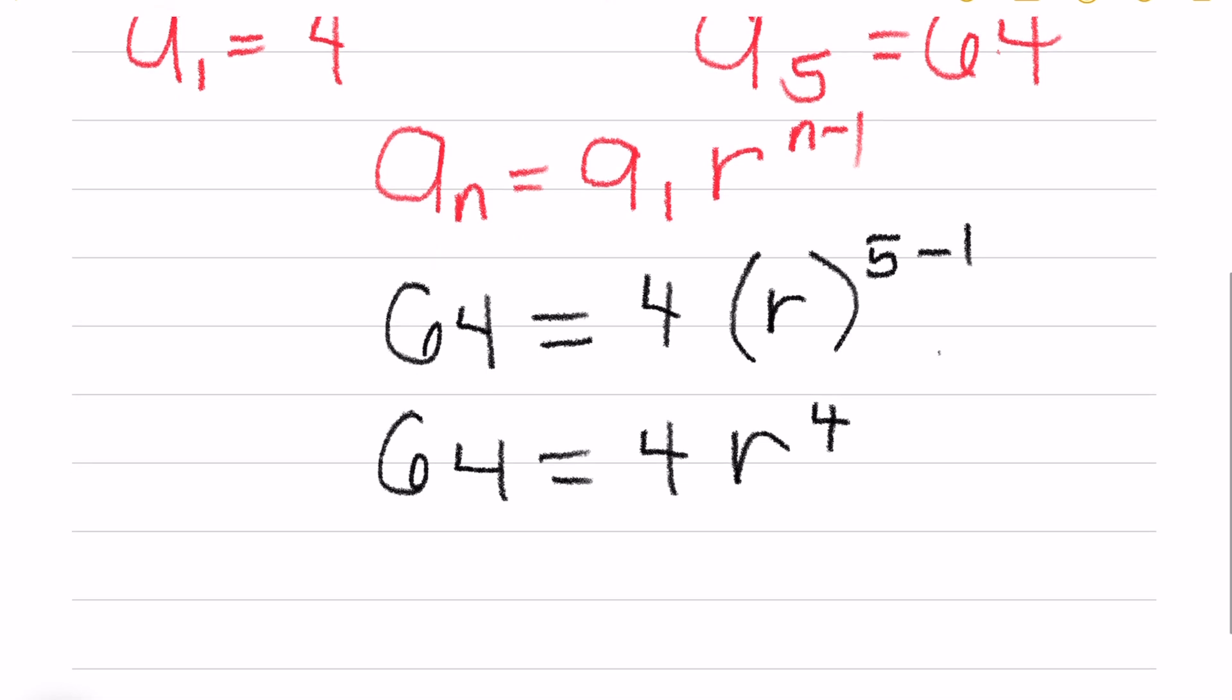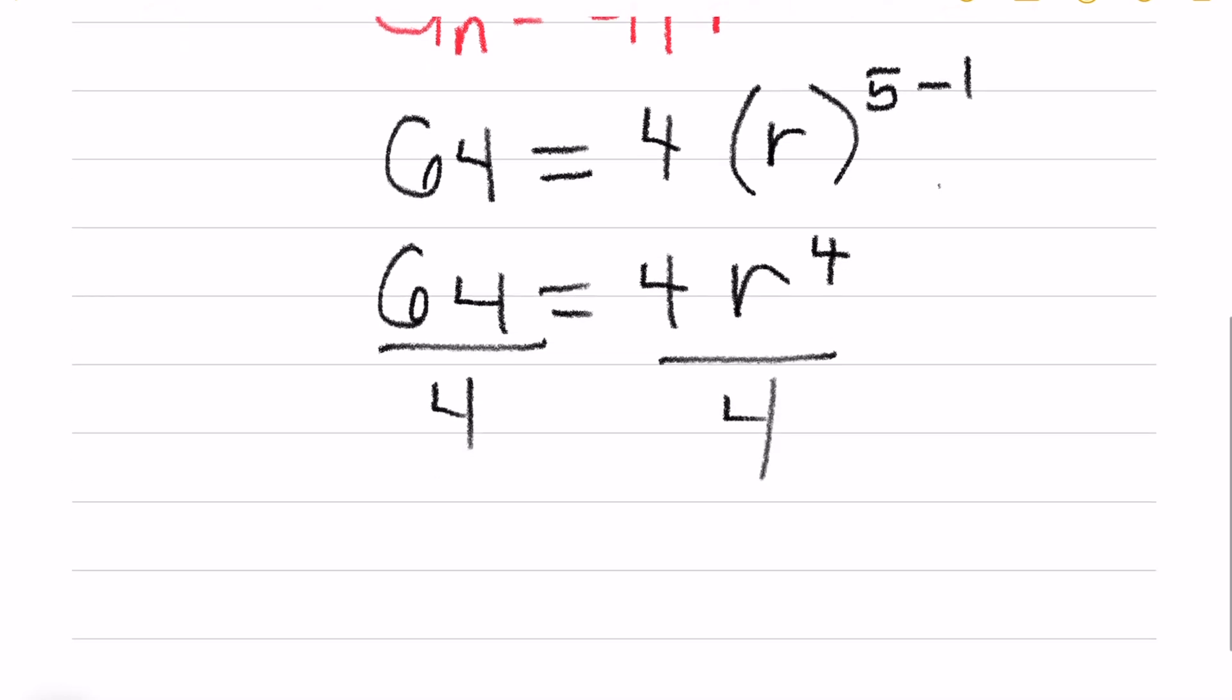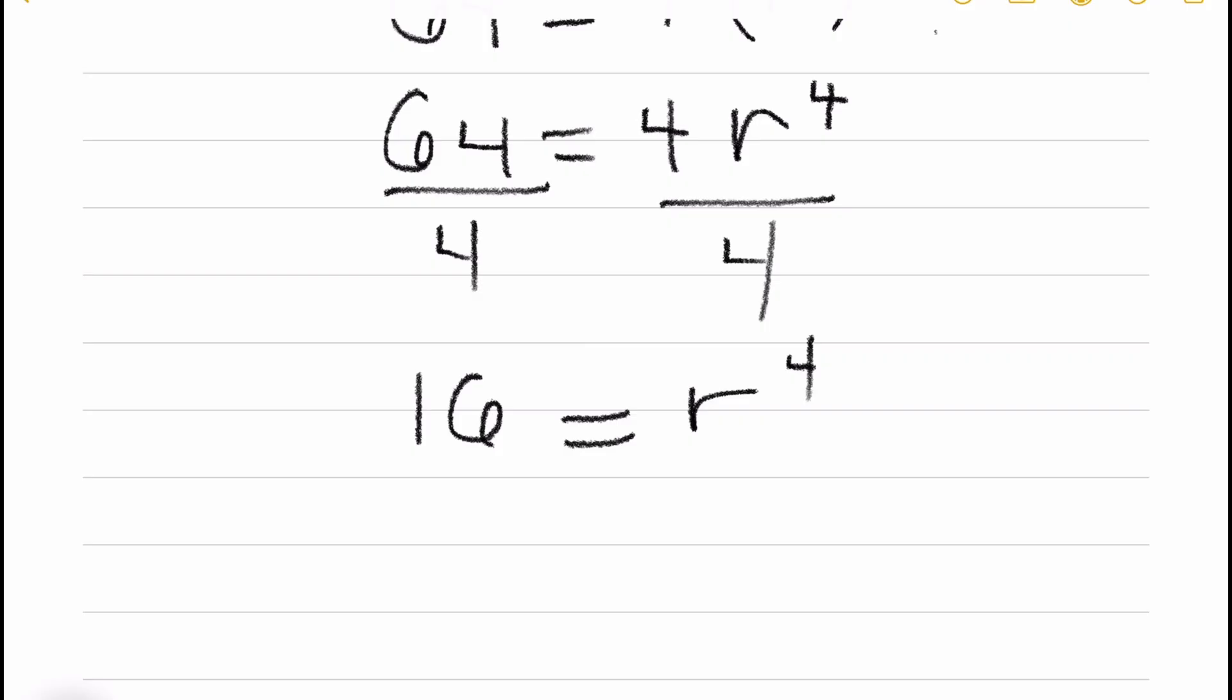Using MPE, Multiplication Property of Equality, we need to eliminate 4 as the coefficient of r. So we divide both sides by 4. r raised to 4, then rewrite or convert 16 into exponential form where its exponent is 4. So what number being multiplied by itself 4 times, and the result is 16? And that is 2.